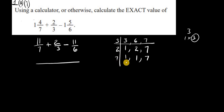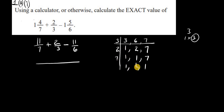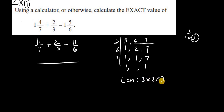The idea is that we want all 1s in the end. We put back the 1s, and 7 into 7 gives us 1. Now we're left with all 1s. We simply multiply the prime factors: 3 times 2 times 7 — that's 3, then 6, then 42 — and that's the LCM. This is the division method.